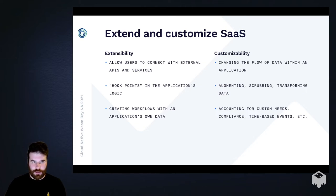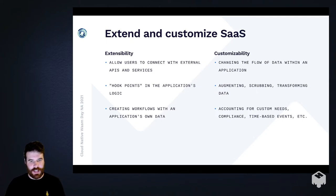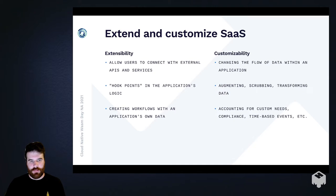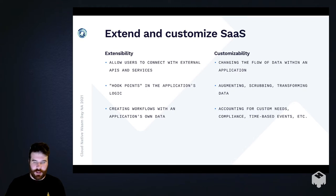If we first look at extensibility, we really want to enable developers to reach out and connect applications to other things in their toolbox that need the data potentially siloed within applications they use every day. We want them to be able to connect to APIs, connect to the network, interact with other services, and funnel data from one to the other. We need to provide hook points in an application to enable the developer to take data from a certain point in the logical flow and funnel it to other places, make decisions based on it, and the overall goal is creating these workflows.